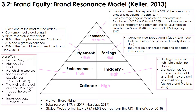Applying the brand resonance model to Dior, it can be seen that at the bottom of the pyramid, the brand's salience is high since Dior's market share is increasing constantly. The company's sales rose by 17% in 2017, while Dior's website global traffic in the last seven months is 4.89 million. Moving to the next stages, the brand's performance shows that Dior meets its customers' preferences by offering unique, high-quality designs, premium cosmetics, French-style couture, and special in-store experiences. The pricing of the company fits the budget of its target audiences.